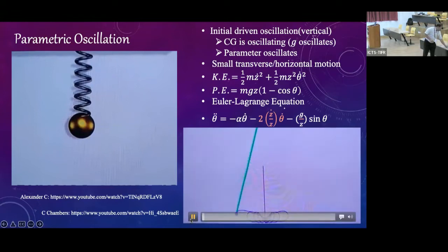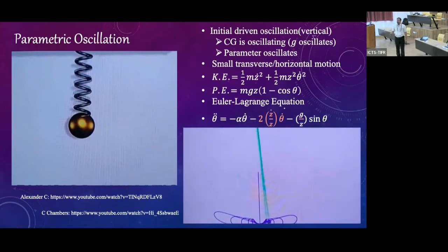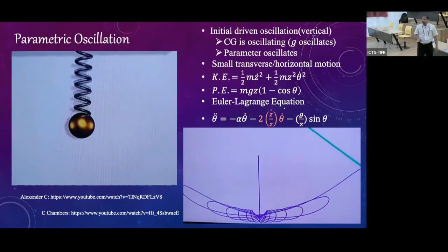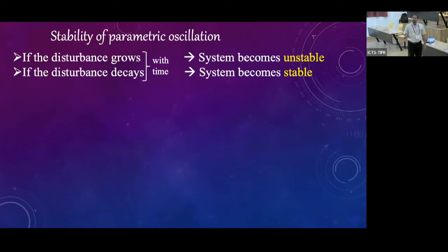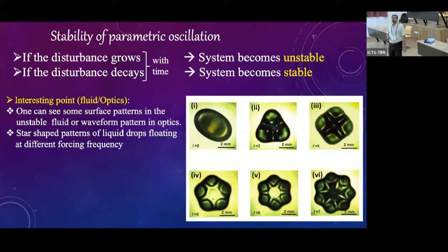Starting with a small oscillation initially, it will become very violent after some time — very high amplitude oscillations in the horizontal direction. Whether the system is stable or unstable is a very challenging question. Stability analysis requires us to look at how a disturbance evolves over time: whether it is decaying or keeps on growing. If it grows, the system is unstable; if it dies down or is periodic, it is more or less stable.